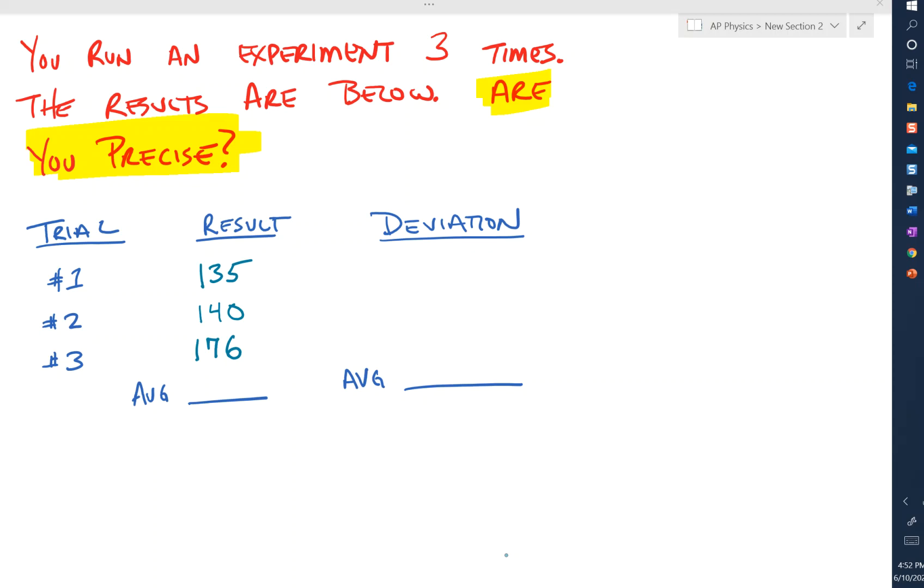In this problem, we're trying to find out if our data is precise. It may not be accurate—it may be the wrong numbers—but we're trying to see if our experiment resulted in the same values being given to us over and over again. Even if they're the wrong values, are they close together?